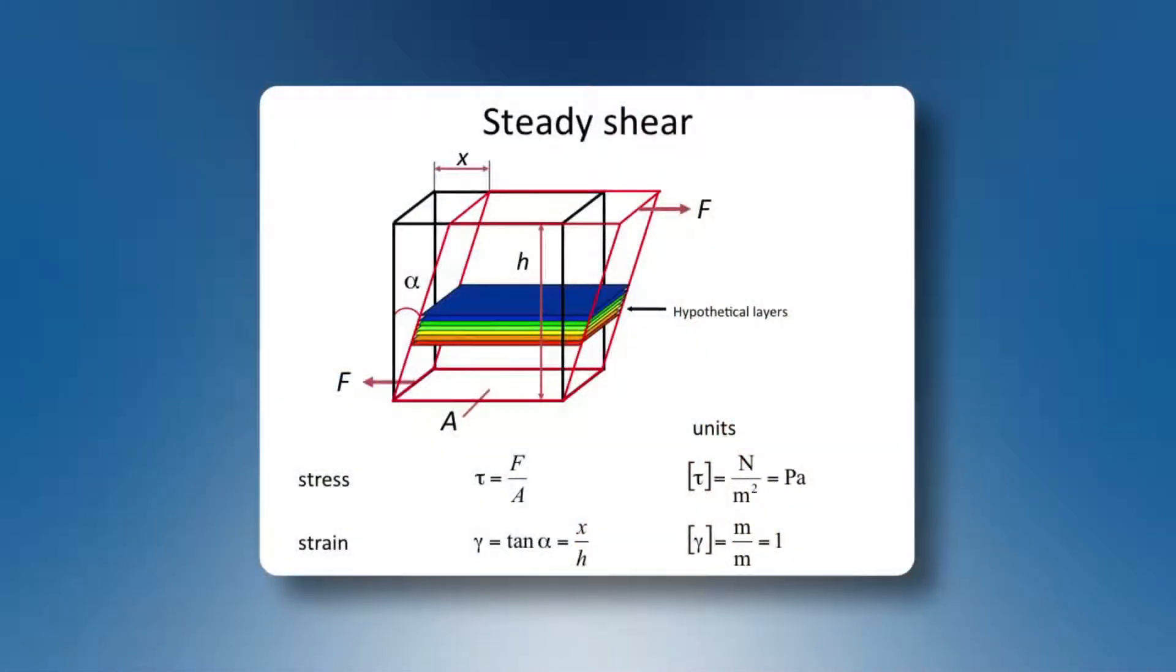The science of rheology describes the response of a material to applied stress. We can define the variable stress, called tau, as a ratio of force versus area. And the strain is called gamma. It's a deviation x over h, or the tangent of alpha.